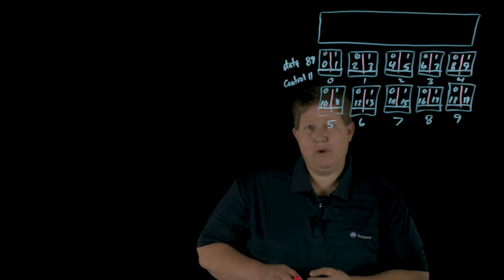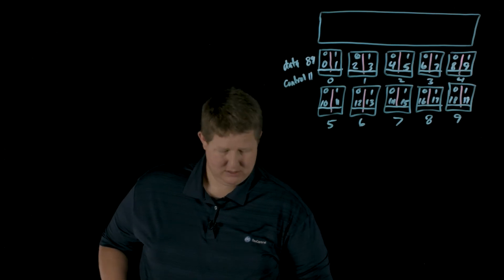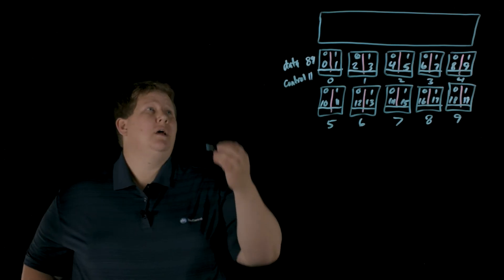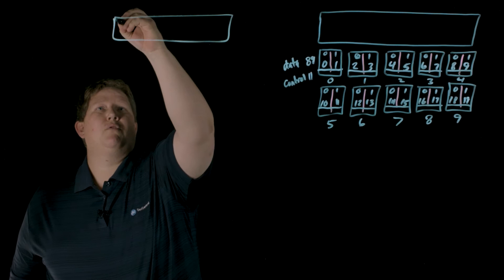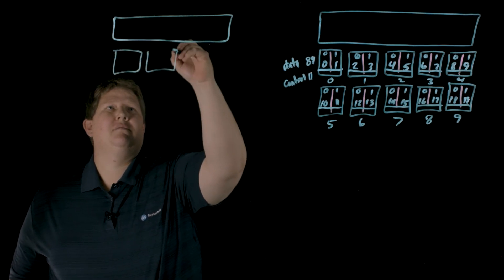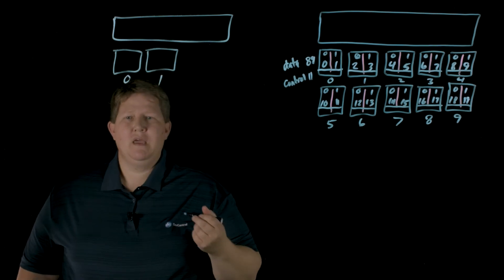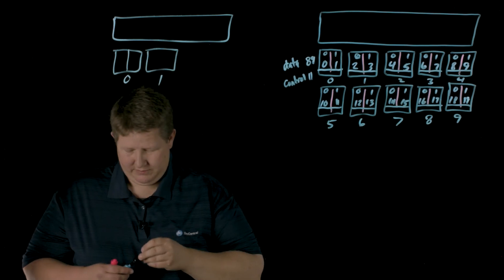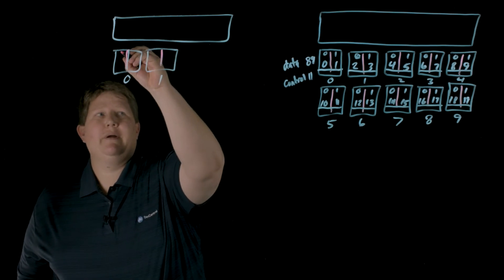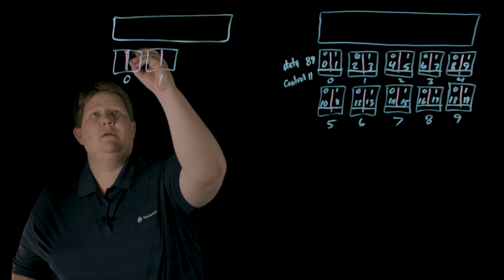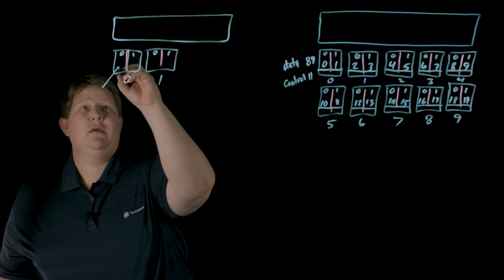So what the developers did starting in 11.5 is they switched to... if you look at the same processor, we still have core 0 and core 1. If we split the hyper-threads, this is still hyper-thread 0 and 1, but what they did is they would dedicate this thread, the even numbered thread to data.